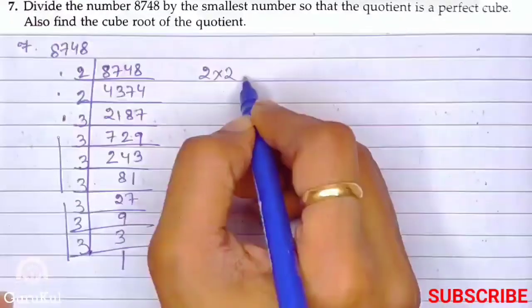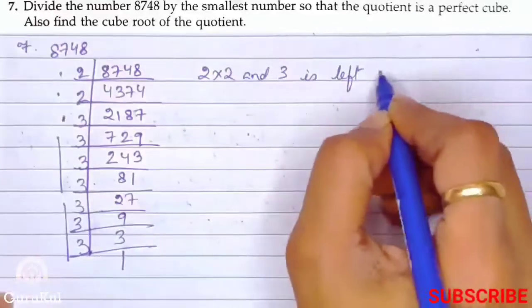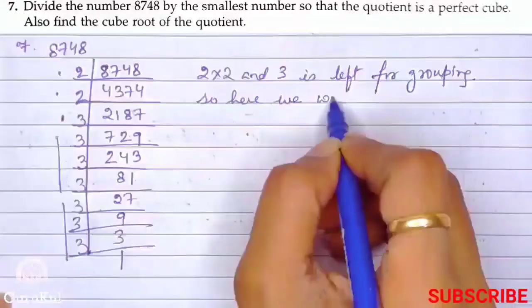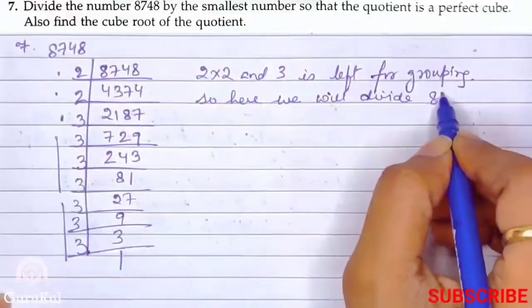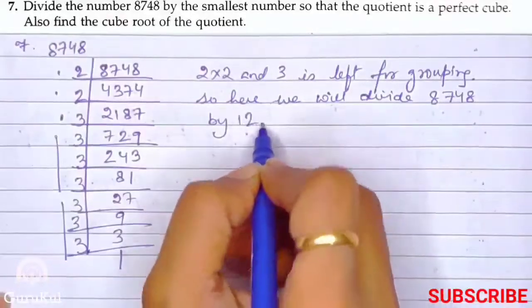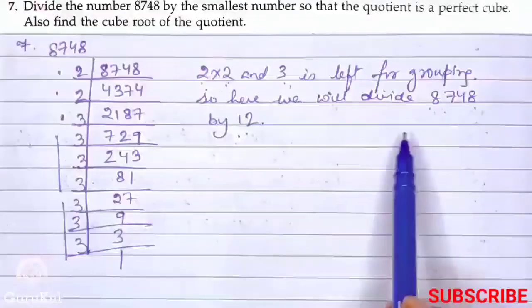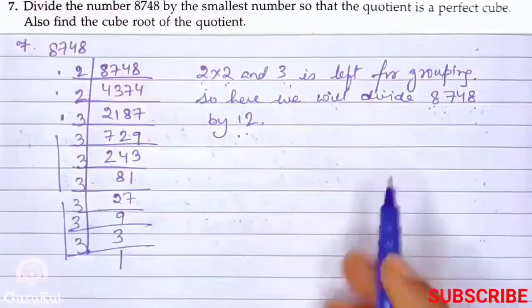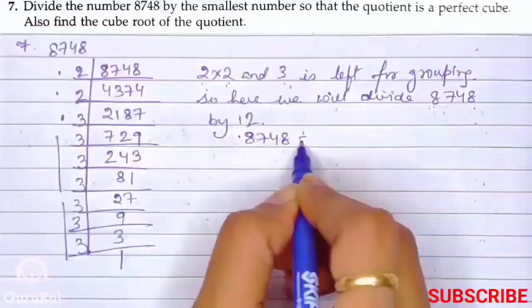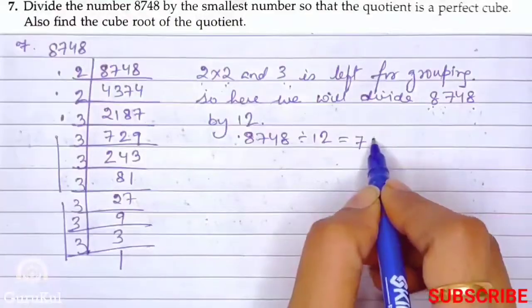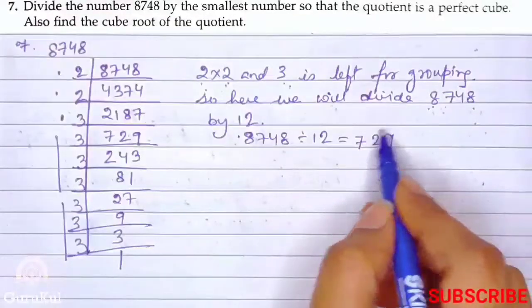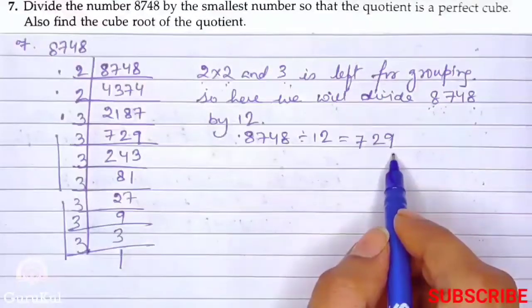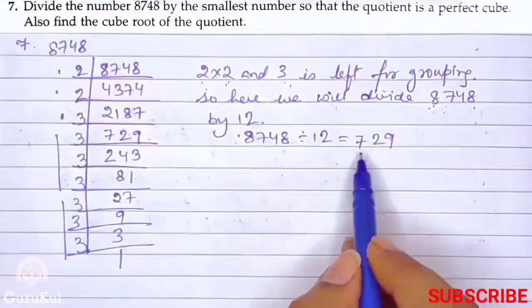So here we will divide 8748 by 12. On multiplying these 2 numbers we got 12. After dividing 8748 by 12 we get the answer 729. When we divide, the answer is the quotient. Now we have to find the cube root of the quotient.